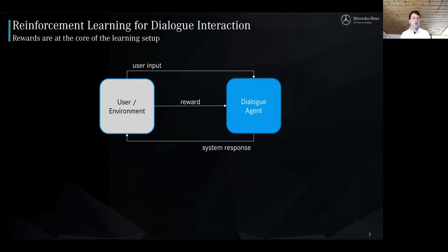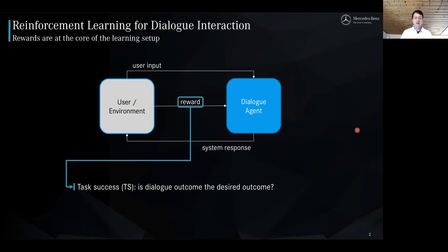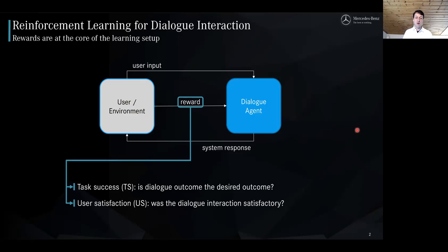In this work, we consider reinforcement learning for dialogue interaction, where a dialogue agent interacts with the user, or generally speaking with an environment, and receives rewards that guide the learning process of the dialogue agent. In related work, this reward has usually been rendered as task success, where the dialogue outcome is compared with the desired outcome. Another line of work looked at user satisfaction as the principal reward component, where not only the outcome of the interaction is in focus, but also how to get there.